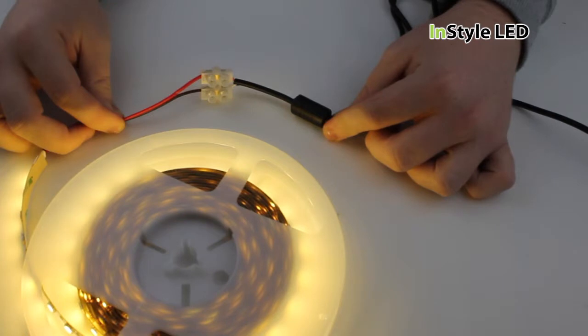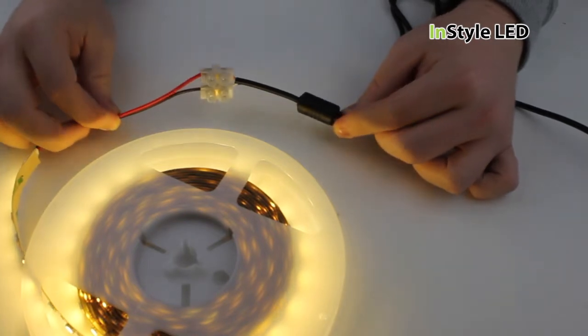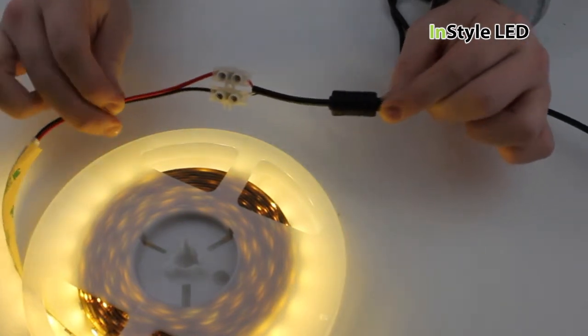You can easily wire the LED tape to the transformer using a connector block and you can extend the cable as so.